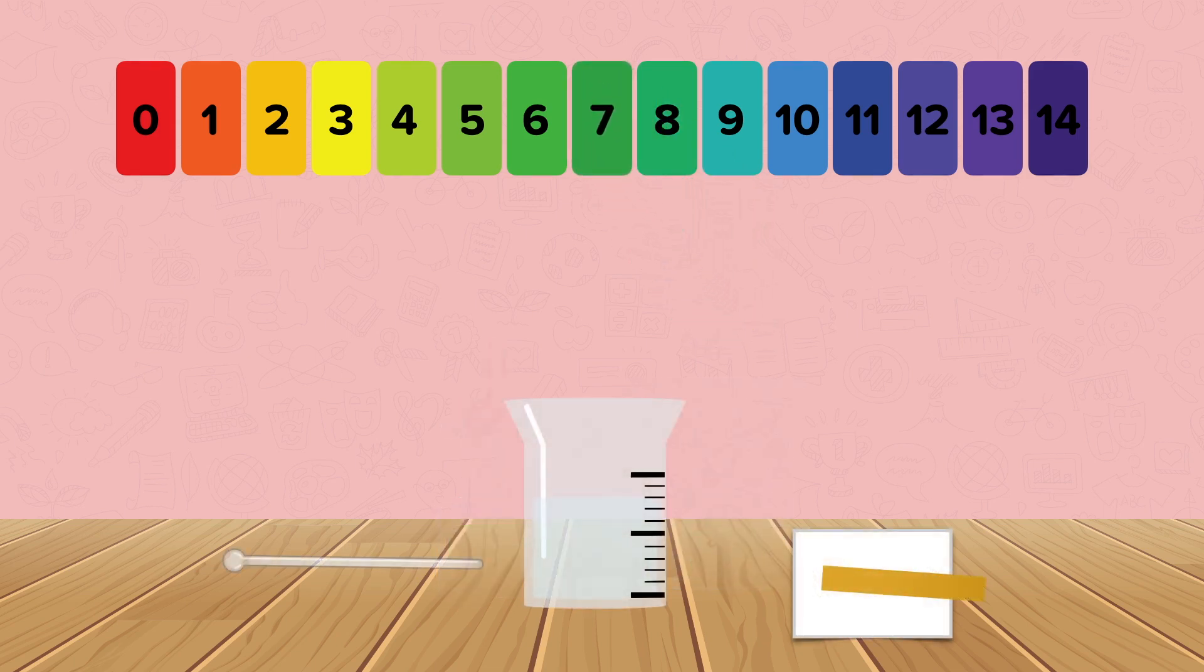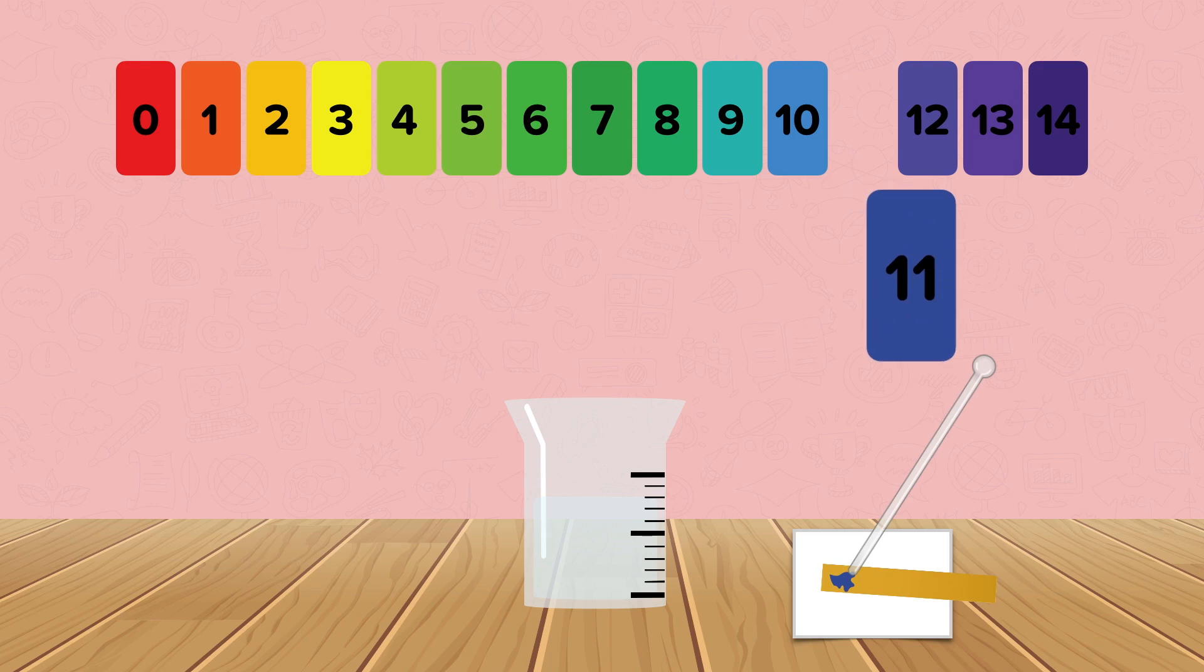Universal indicator paper works in a similar way. A clean glass rod is dipped into the solution and one drop of solution is transferred to a piece of universal indicator paper on a white tile. After a short period of time a color will develop which can be matched to the color chart. Here the paper has turned dark blue which means the solution is alkaline because it has a pH of 11.